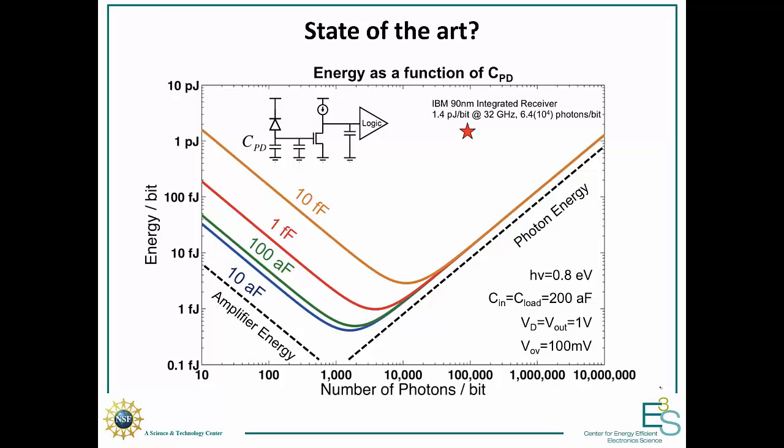And it's summarized on this plot here. So, on the x-axis, we've got the number of photons per bit we're going to use. So, that's Q photonic from the previous slide. And on the y-axis, we've got the resultant energy per bit of the system. So, what we've got in high number of photons per bit is that the cost and the energy per bit of the link is going to be dominated by the photon energy, which is represented here.